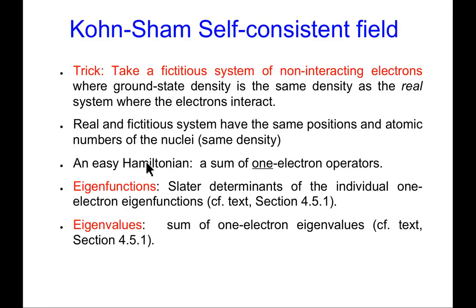Since every electron behaves independently, the Hamiltonian is a sum of one-electron operators. And the nice thing about Hamiltonians that are sums of one-electron operators, they don't have any two-particle terms, is that the proper eigenfunctions can be Slater determinants of the individual one-electron eigenfunctions, and the eigenvalues are just the sum of the one-electron eigenvalues.